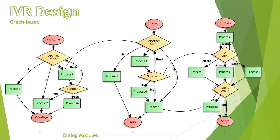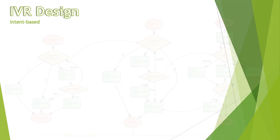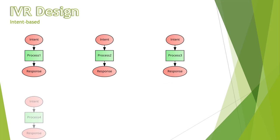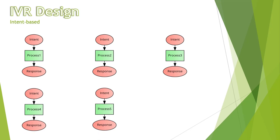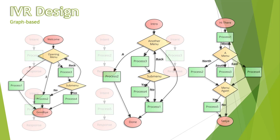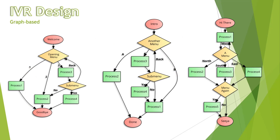Intent-based designs do not seem to gain much from flowchart visualizations. A basic intent-based application like Tacobot is almost entirely made up of terminator-process-terminator combinations, with no connections between each chart. This is a drawback for intent-based design, but the trade-off is in simplicity. In general, adding functionality to a graph-based application looks like this.